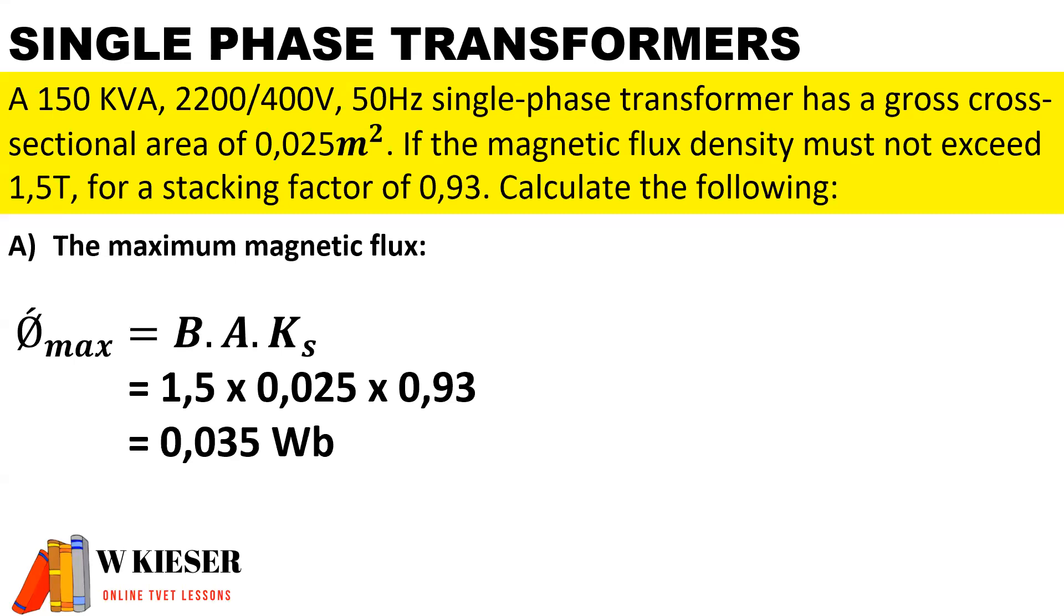In part A, the maximum magnetic flux. To calculate the maximum magnetic flux, it is the flux density in Tesla multiplied by the area in meters squared and multiplied by the stacking factor of 0.93, and that gives us a maximum flux per pole in Weber of 0.035 Weber.